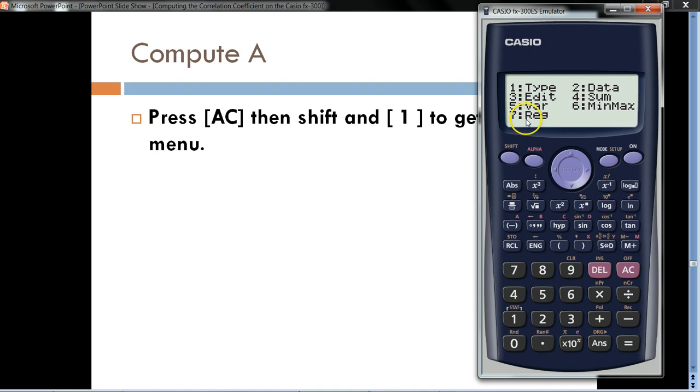And then, we're interested in linear regression. So, this might look different on your calculator, but we want the one that says Reg right there, 7 for me. And notice here, we're given A and B. That is the y-intercept and the slope for the regression line. R is the correlation coefficient. We talked about that in a different video. So, let's go ahead and hit number 1 for A. Go ahead and hit equals.